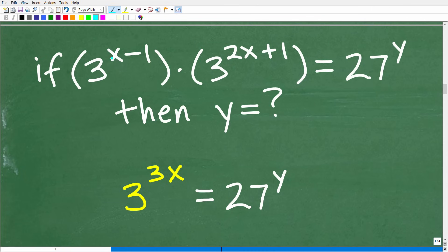If 3 to the x minus 1 times 3 to the 2x plus 1 is equal to 27 to the y power, the first thing we want to do is clean up this expression. We said, oh, look, they have the same base. Let's just make a simplified version of this. And now here is our problem, which is a much easier problem to interpret. 3 to the 3x is equal to 27 to the y.